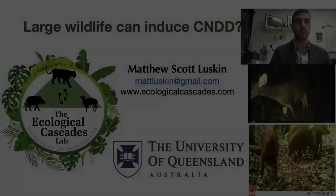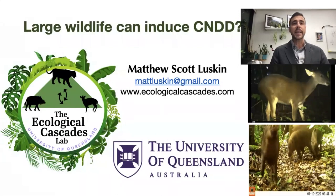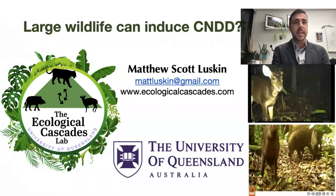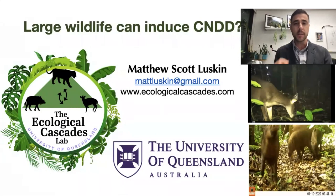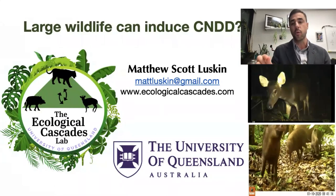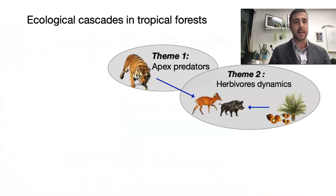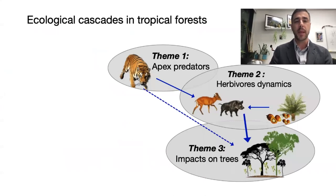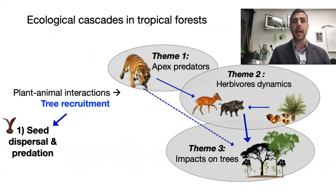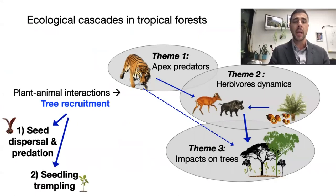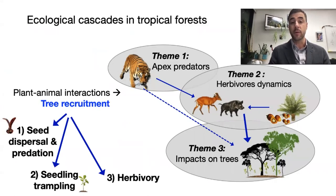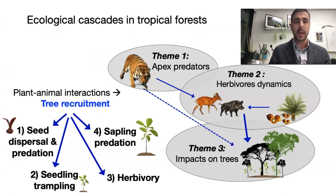Hello, my name is Matthew Luskin. I'm on the faculty of the University of Queensland in Australia. Today I'm going to give you a fascinating case study that will explain how large wildlife can induce conspecific negative density dependence in plants — and not the way you're thinking, through non-trophic, non-selective interactions. In my lab, we work on interactions among wildlife species, the effects of apex predators on herbivores, or the effect of food subsidies on herbivores. In this talk, I'll focus on how herbivores can influence the tree community through plant-animal interactions and how that affects tree recruitment. Today I'll focus on sapling predation — meaning any reason an animal will kill a stem, whether or not it's eating it.